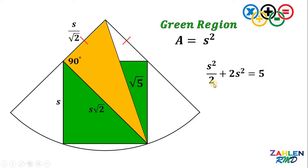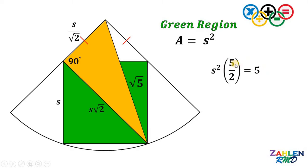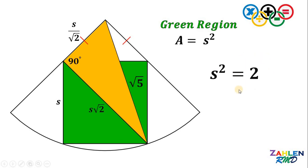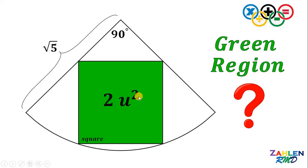Factoring out S squared, the left-hand side becomes S squared multiplied by one-half plus 2, which gives us 5 over 2. Multiplying the whole equation by 2, we get 5S squared equals 10. Dividing both sides by 5, S squared equals 10 over 5, which is 2. Therefore, the area shaded in green — simply the area of the square — must be equal to 2 square units. And as always, we are done.